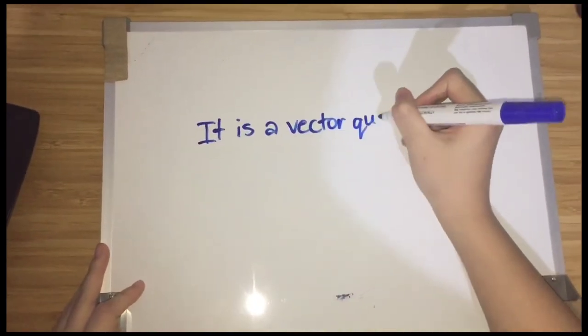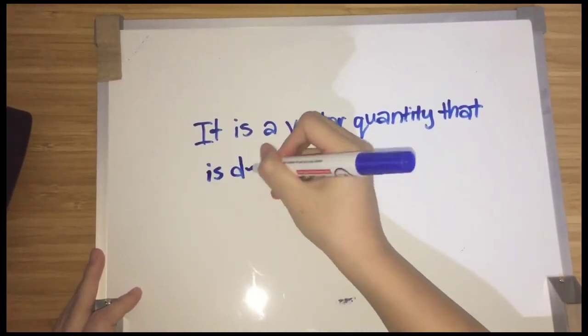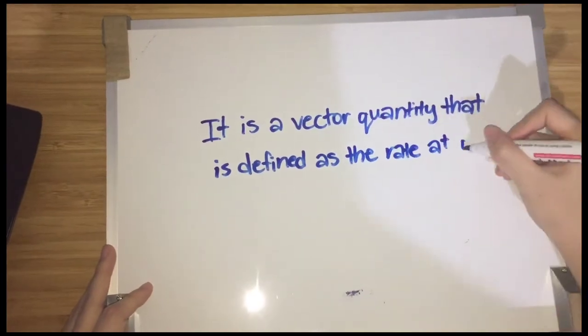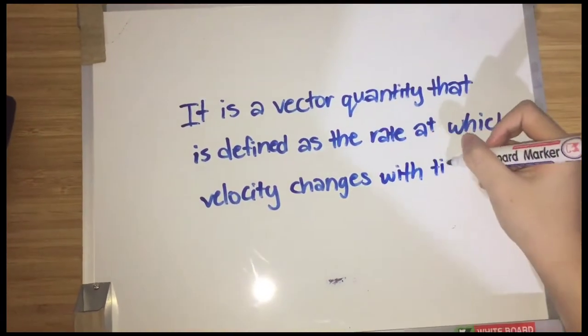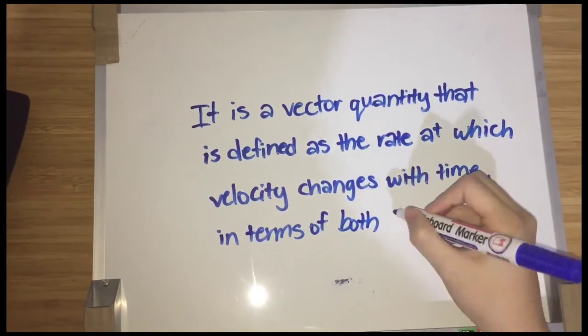So what is acceleration? Acceleration is a vector quantity that is defined as the rate at which velocity changes with time, in terms of both speed and direction.